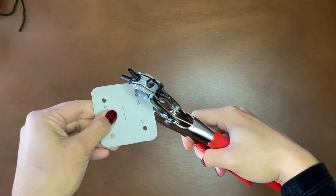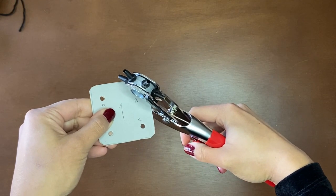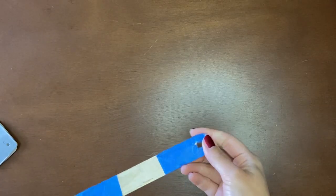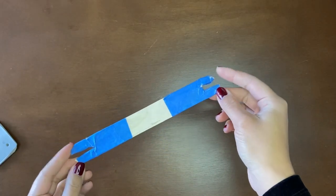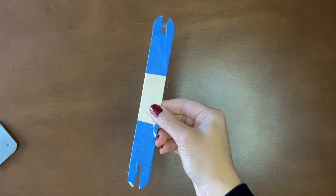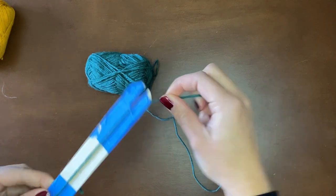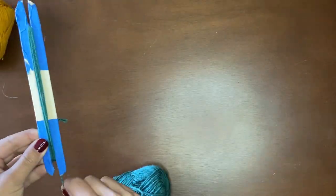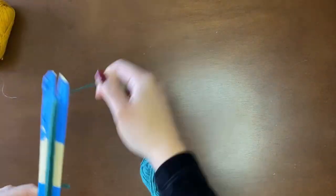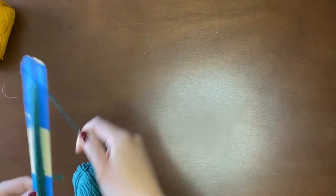For the holes in the corners I used a leather punch. You will also need a shuttle which in my case is just a paint stirring stick that has slits in both ends and some yarn. Pick one of the yarns and start wrapping it around the shuttle. This will be our weft yarn.